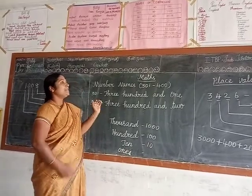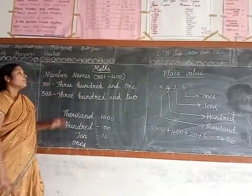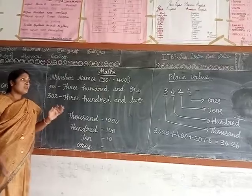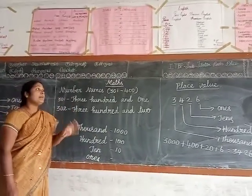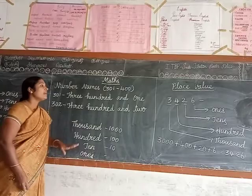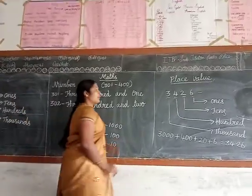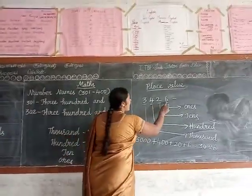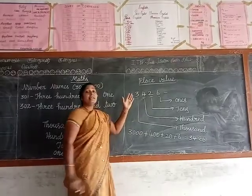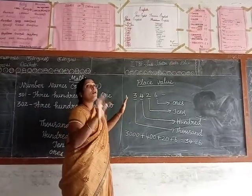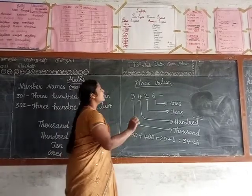Now today I introduce place value — the place value of a 4-digit number. What does it mean by a 4-digit number? A 4-digit number has only 4 digits. For example: 1, 2, 3, 4 — how many digits are there? 4 digits. So this is a 4-digit number.